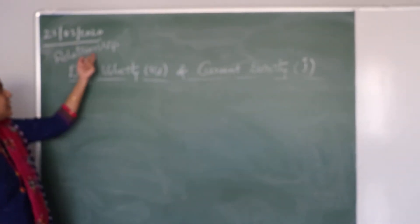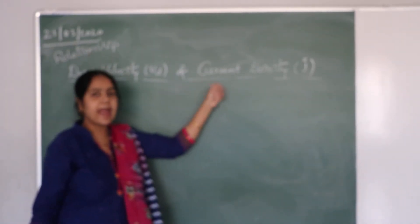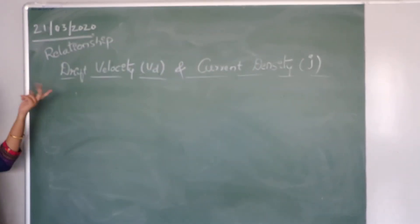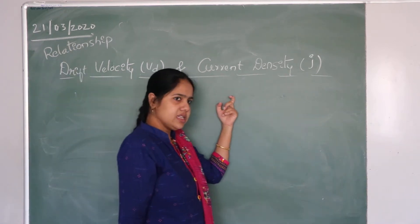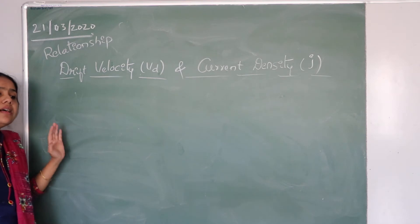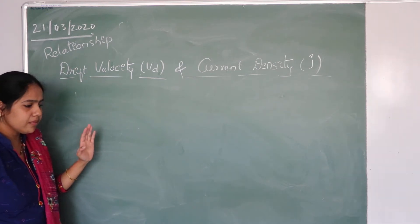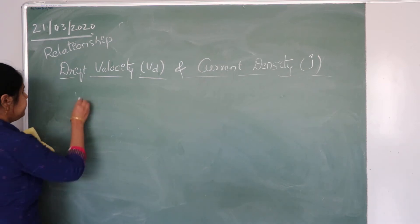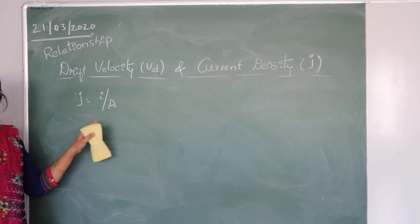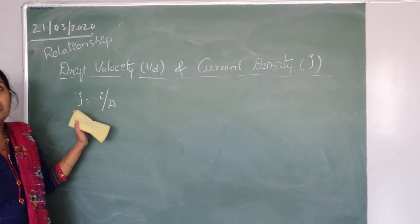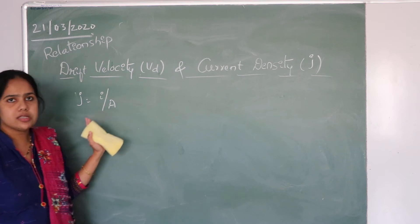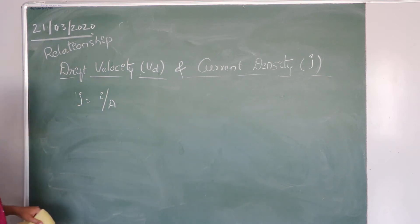The next topic is the relationship between the drift velocity and current density J. First, we need to know what current density is. Current density is the amount of current flowing through a unit cross-sectional area of the conductor. The current flowing per unit cross-sectional area is what we call the current density.